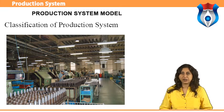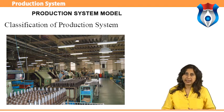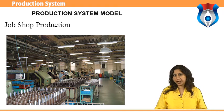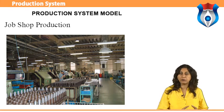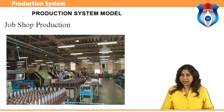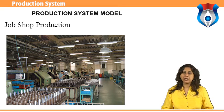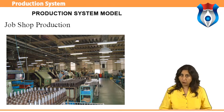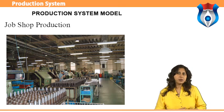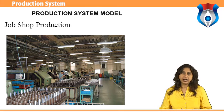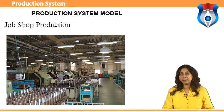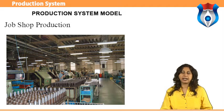Production systems can be classified as job shop, batch, mass, and continuous production systems. Job shop production is characterized by manufacturing one or a few quantities of products designed and produced as per the specification of customers within a prefixed time and cost. The distinguishing feature is low volume and high variety of products. A job shop comprises general purpose machines arranged into different departments, where each job demands unique technological requirements and processing on machines in a certain sequence.